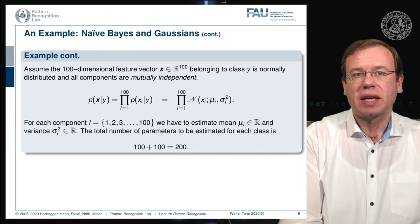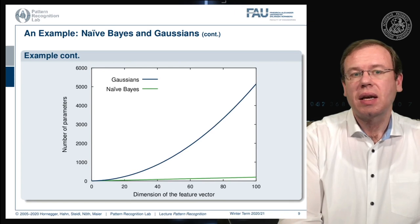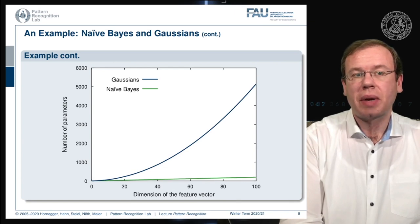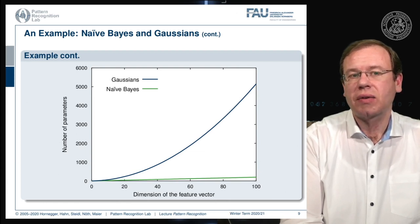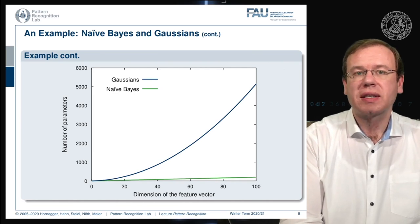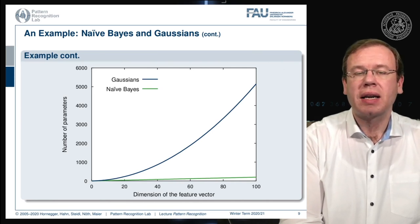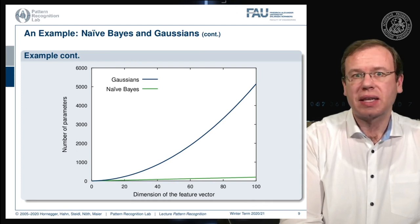This reflects quite a bit of reduction in terms of parameters. In this plot, the number of parameters is on the y-axis and the dimension of the feature vector is on the x-axis. With Naive Bayes, this is a linear relationship, while with a Gaussian with full covariance, the number of parameters grows at a quadratic rate.